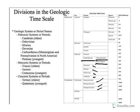Then we move to the Mesozoic, which is divided up into three periods: the Triassic, Jurassic, and Cretaceous. And then the Cenozoic is divided up into two: the Paleogene and the Neogene.